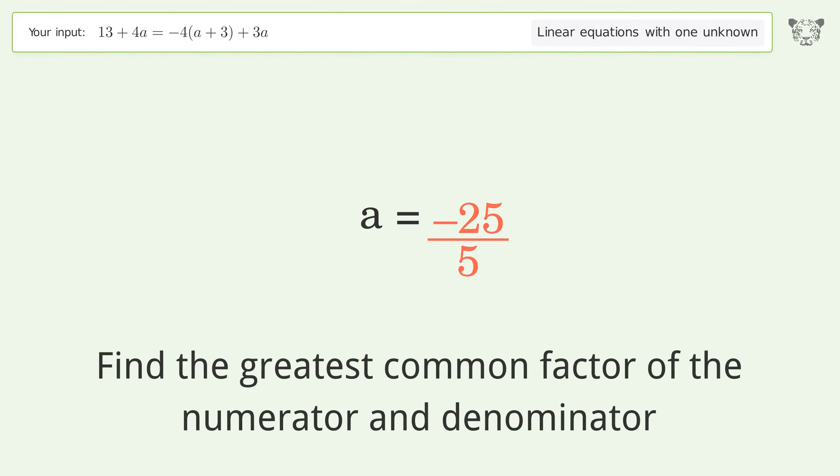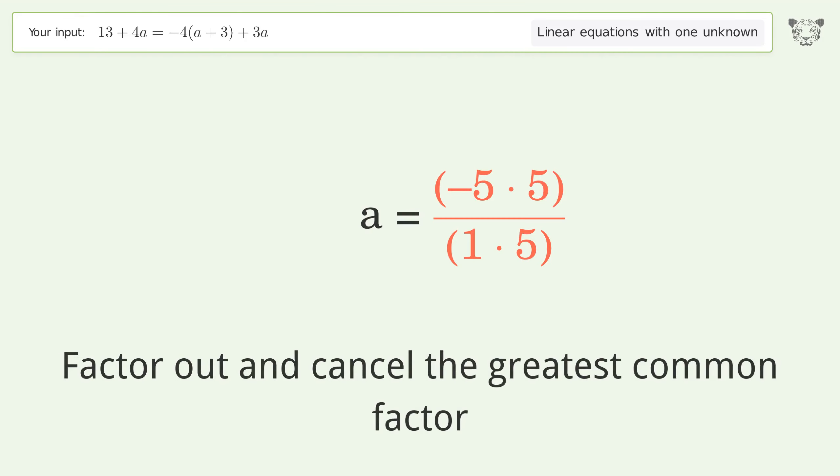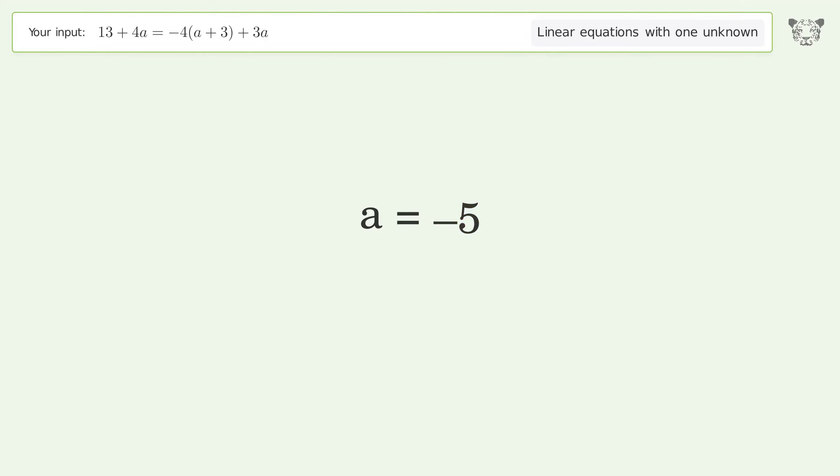Find the greatest common factor of the numerator and denominator. Factor out and cancel the greatest common factor. The final result is a equals negative 5.